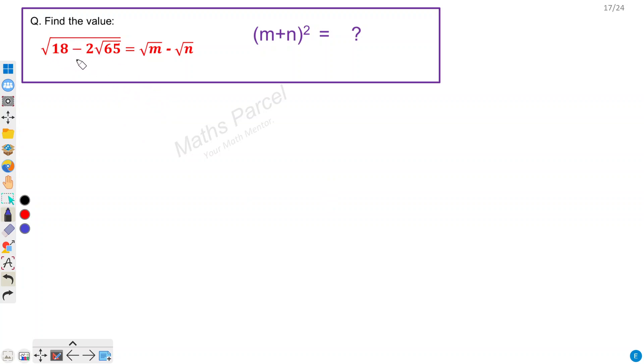The question is given as square root of 18 minus 2 square root of 65 equal to square root of m minus square root of n, and what is the value of (m+n)²?